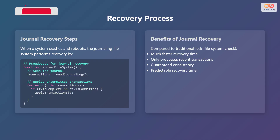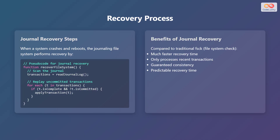Now let's understand the recovery process. When a system crashes and reboots, the journaling file system performs recovery using these steps. First, the system scans the journal to identify any uncommitted transactions. Then, it replays these uncommitted transactions by applying the changes recorded in the journal to the main file system.